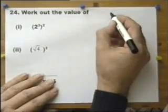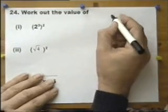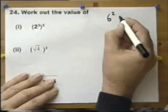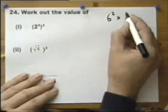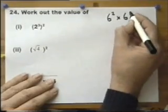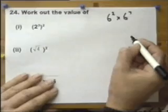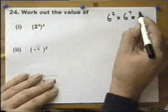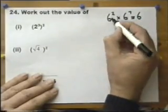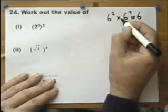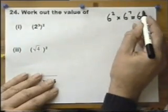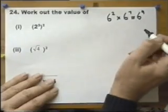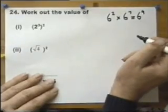The first rule is, let's look at something like this. Let's suppose the question said that. When you multiply, you add the indices together. So, 6 to the power of 2 times 6 to the power of 7 is 2 add 7, which equals 9. That's called the first rule of indices.